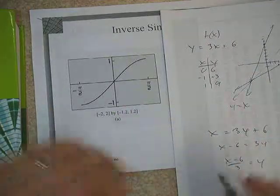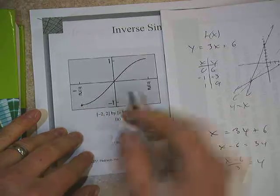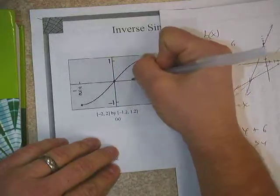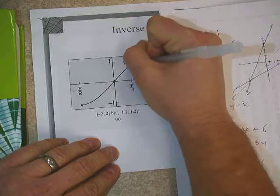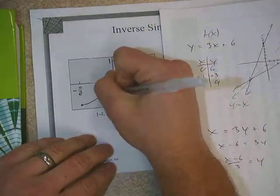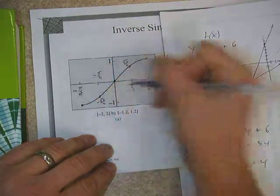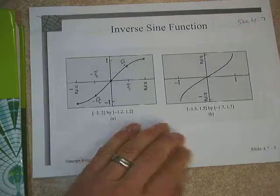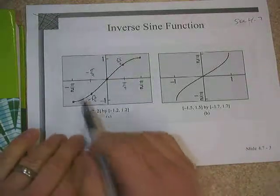So, if it does have an inverse, we should expect that the inverse will have points that are the reverse of the points we see here. Looking at some key points: we have (negative pi/2, negative 1), (pi/2, 1), (0, 0), (pi/4, radical 2 over 2), and (negative pi/4, negative radical 2 over 2). If we reverse those points and plot them on a coordinate plane, we get the inverse function.